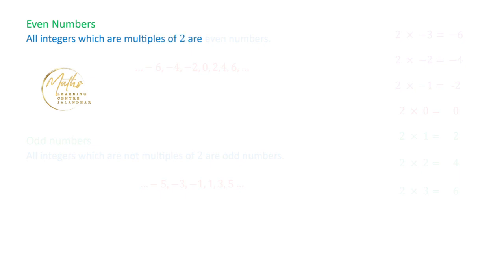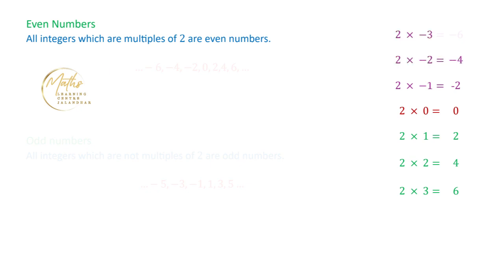The next terms are even numbers and odd numbers. Even numbers are all integers which are multiples of 2. So multiples of 2 include 0, 2, 4, 6 and so on, and also negative multiples: minus 2, minus 4, minus 6 and so on. All these numbers which are multiples of 2 are called the even numbers.